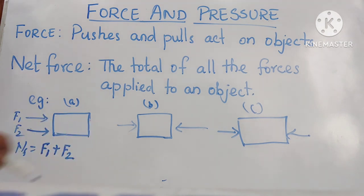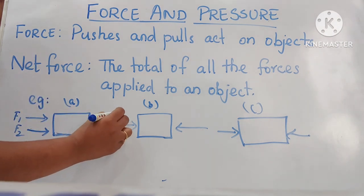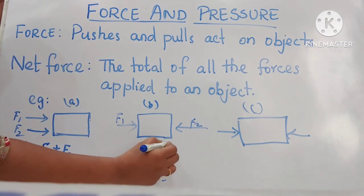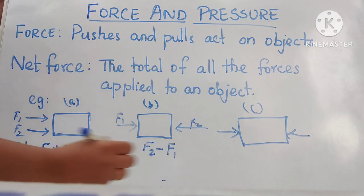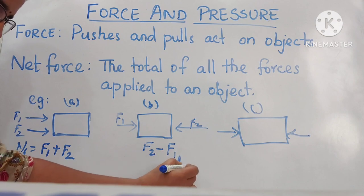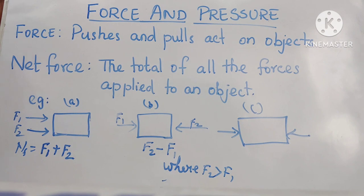In the second case, if unbalanced forces act on an object in opposite directions, the net force is the difference between the two forces and is in the direction of the larger force. We find the net force by subtracting the smaller force from the larger force. While F2 is greater than F1, the net force is F2 minus F1.